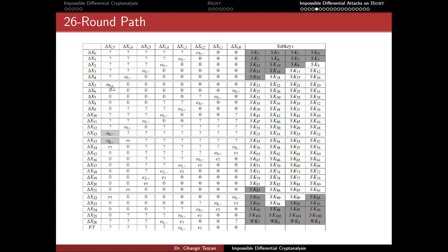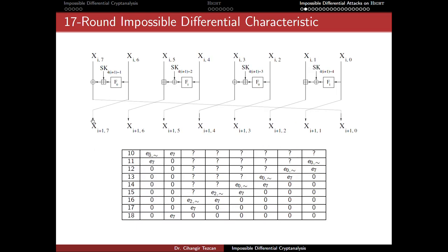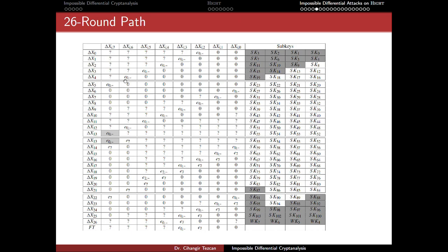The question is: what kind of input difference should give this output difference? If you go back to the picture of HIGHT, you place E0-tilde here and check what it should be in the previous round, going in the encryption direction. If you add five more rounds, this is what you get. You might ask why not add one more — six rounds — but when you try that, you find that the time complexity cannot be less than 2^128, which is the exhaustive search bound, so it makes no sense.